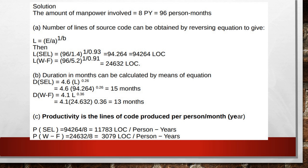Since lines of code are measured in thousands, the actual number of lines is 94,264. This means that using 96 person-months of effort, the project can produce 94,264 lines of code as per the SEL method. Using the Watson-Felix method with its different constants, the number of lines of code is 24,632.